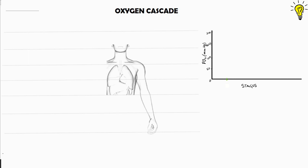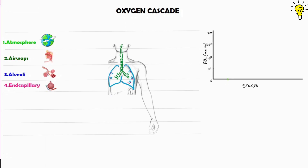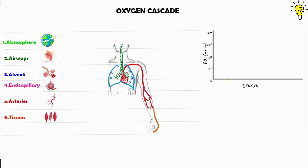Oxygen travels down from the atmosphere to mitochondria along the pressure gradient in 7 stages. From atmospheric air, Oxygen moves into the airways until it reaches the alveoli, from where it is picked up by pulmonary capillaries lining the alveoli. From end capillaries, Oxygen is pumped along the heart into the arterial system, which ultimately carries Oxygen to target tissues. Through the tissues, Oxygen diffuses into cell cytoplasm and reaches the mitochondria — the powerhouse of aerobic metabolism.